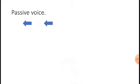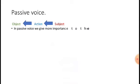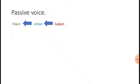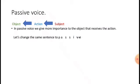Now let's see passive voice. Passive voice is the opposite of active voice. In passive voice, we give more importance to the object that receives the action — more than the person who did it. We give more importance to the thing that receives the action, which is the object. Let me show you with the same examples. We are going to change 'I love my parents' and 'Ronald repaired my car' into passive voice.